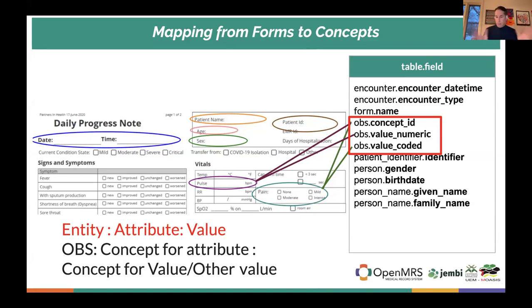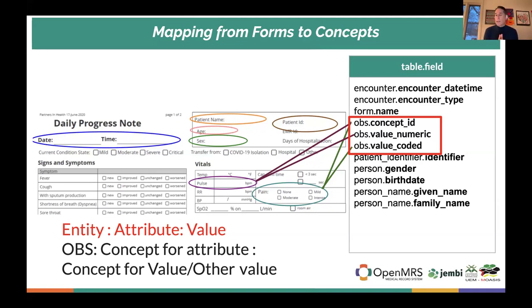What is different about OpenMRS is we use what's called an entity-attribute-value database model, or EAV. Instead of having a really wide table with all these different columns for everything you might want to capture about a patient — where every new thing to capture requires a database change — we have a column for observations, a column for the concept (what is it: is it pulse, is it pain?), and then a set of columns for whether it's a numeric value, a text value, or a coded value. This is really powerful because it means we can add new things to our database without changing its actual structure, allowing us to collect things in a very flexible way.